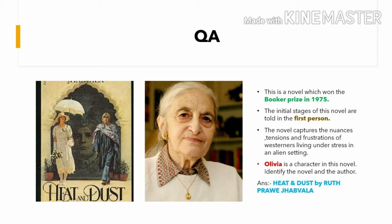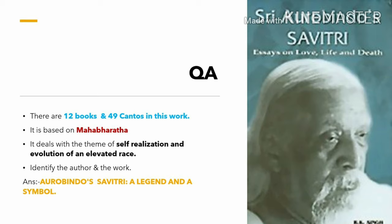Next question. This is a novel which won the Booker Prize in 1975. The initial stages of this novel are told in the first-person narrative. The novel captures the nuances, tensions, and frustrations of Westerners living under stress in an alien setting. Olivia is a character in this novel. The answer is Heat and Dust by Ruth Prawer Jhabvala. Next question: there are 12 books and 49 kandas in this work. It is based on the Mahabharata and deals with the theme of self-realization and the evolution of an elevated race. The answer is Aurobindo's Savitri: A Legend and a Symbol.